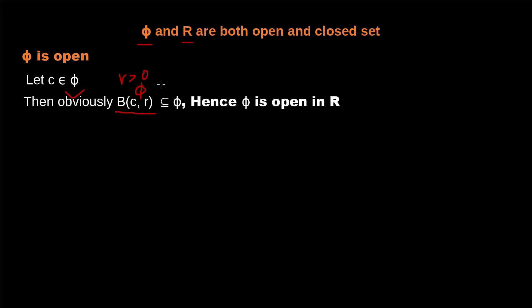It is obvious that the empty set is always a subset of the empty set. So we can see that for all elements belonging to this set, we can find an open ball which lies entirely in this set. Hence, we can say that φ is an open set in ℝ.